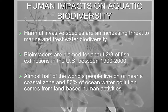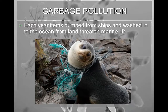Other impacts on aquatic biodiversity include invasive species, and bio-invaders are blamed for about two-thirds of our fish extinctions. Just like the Nile perch in Lake Victoria, a bio-invader is an organism that enters an ecosystem and out-competes all native organisms. Half of the world's people live in or near a coastal zone, and 80% of the pollution going into the ocean comes from land-based human activities. Every year we dump things from ships and materials get washed into the ocean from land, threatening marine life.